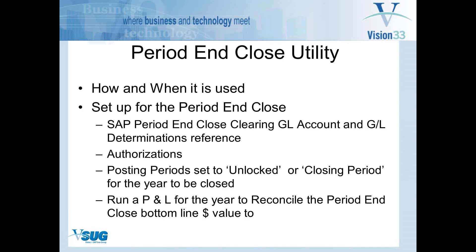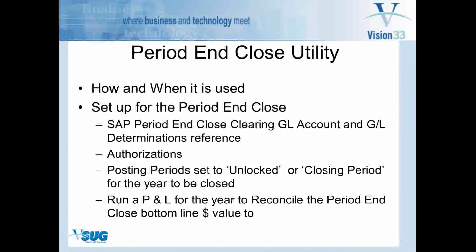When is it used? The nice thing about this product is you can use it more than once. Some people who have had other software packages with a hard close — meaning they close the period or the year and can't go back and change anything — are used to waiting maybe until June or July until their accountant tells them the final entries. But with this, you can close maybe end of January or beginning of February so that your balance sheet is right. Then when you get your adjusting entries from the CPA, you go and post those into the last year, rerun the period and close, and just grab those pieces. That makes the product pretty useful.